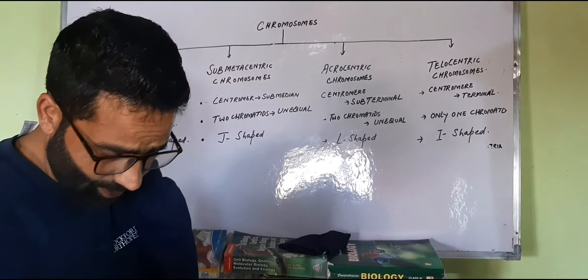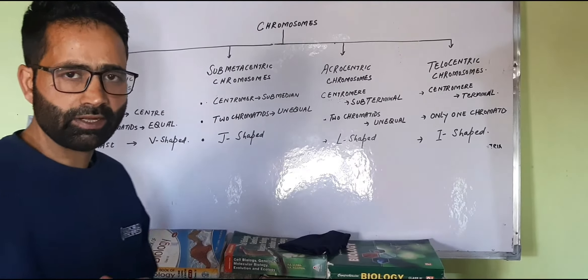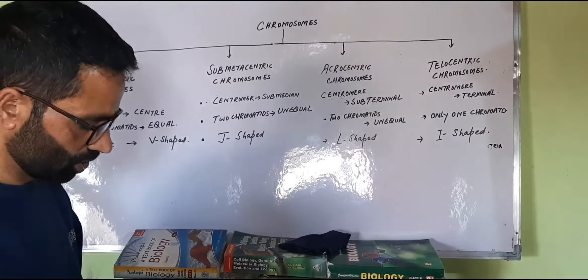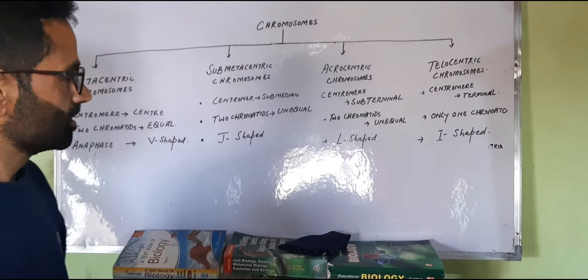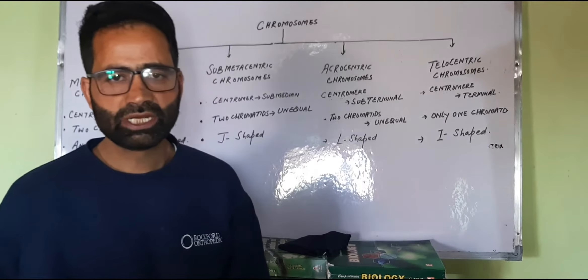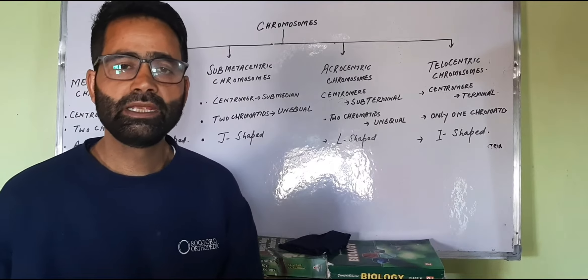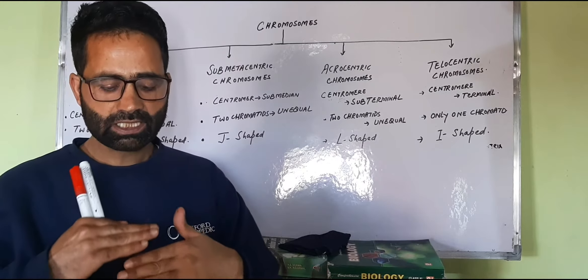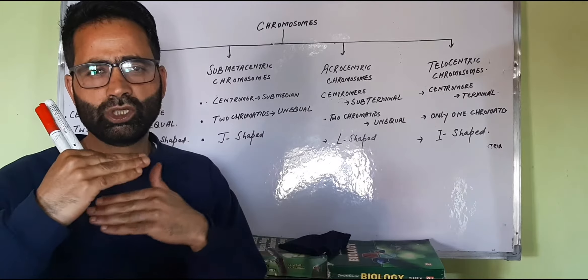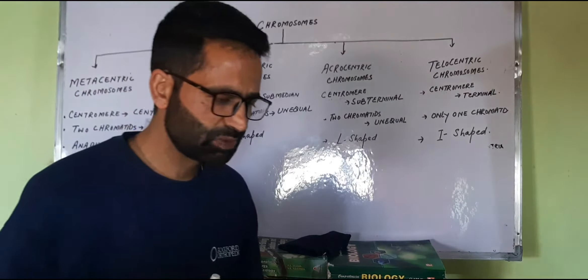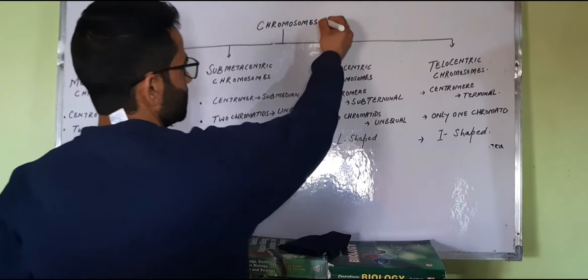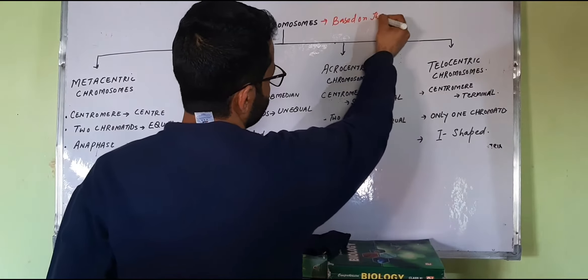Hello dear students, we were discussing about the chromosome. We have already done the structure of the chromosome. Now the classification of the chromosomes is based on the position of the centromere or the primary constriction — whether it is at the median position, sub-median position, sub-terminal position, or the terminal position. On that basis, chromosomes have been divided into four classes.